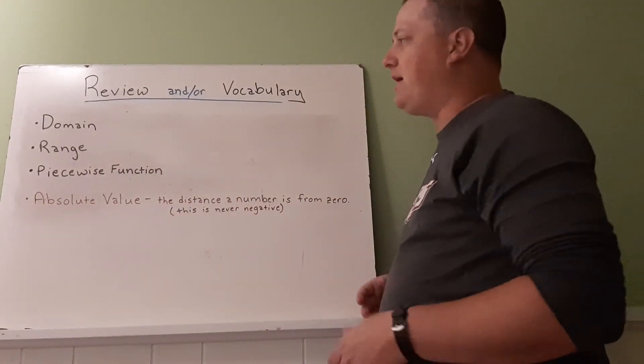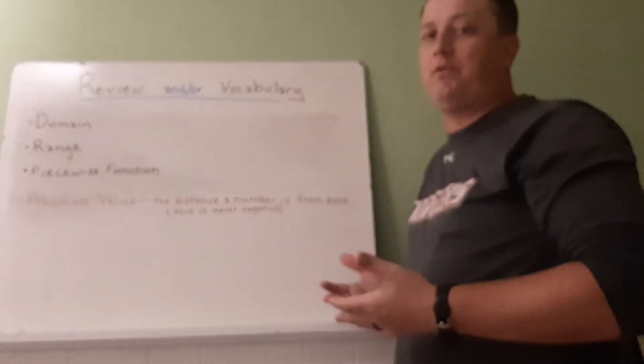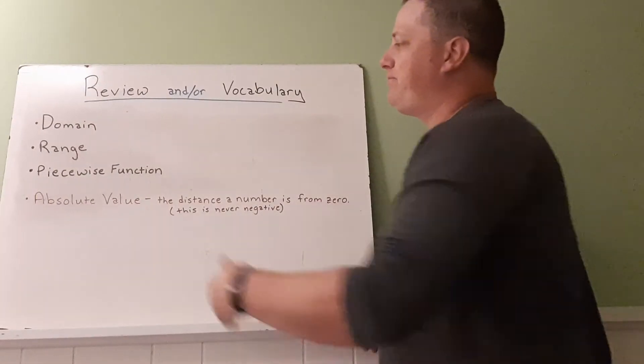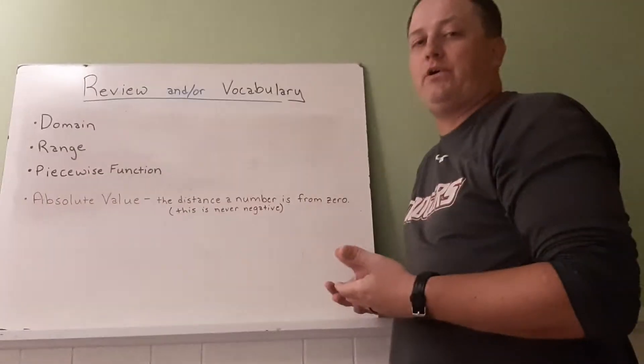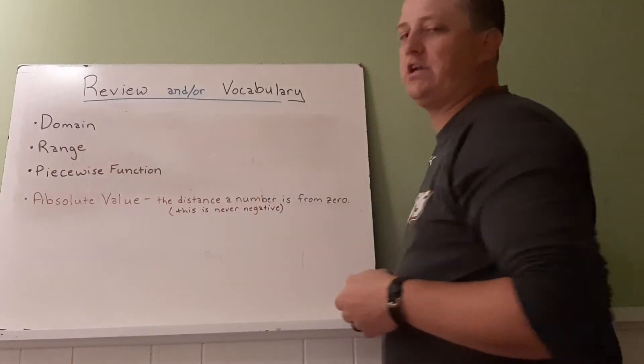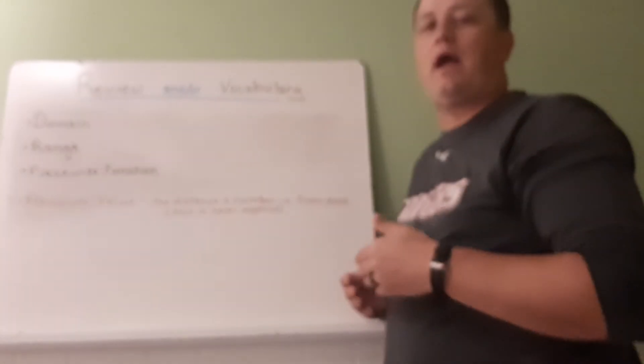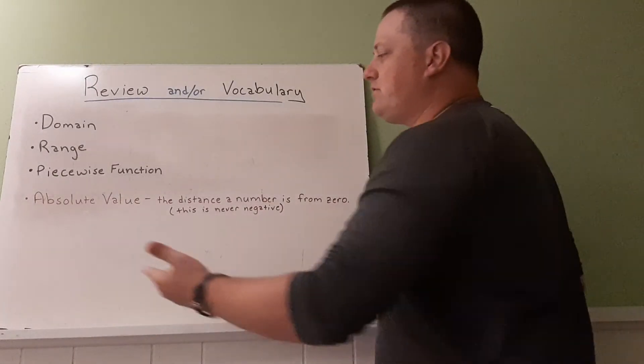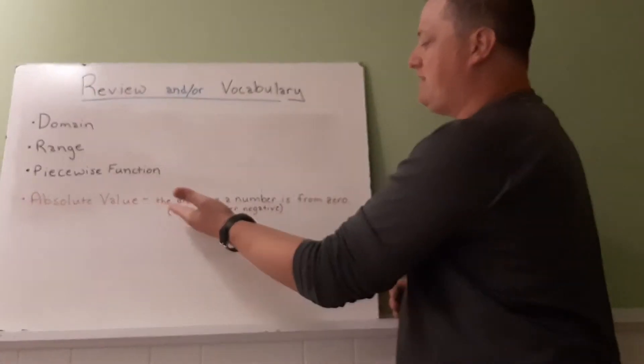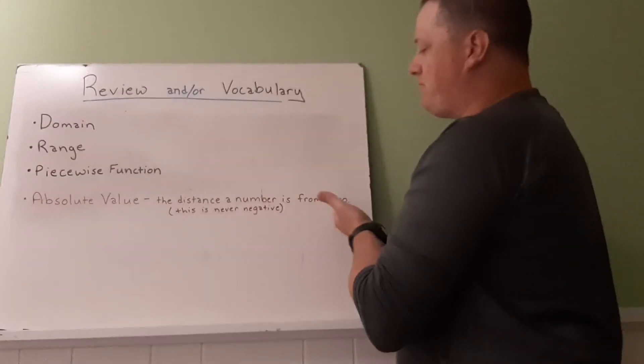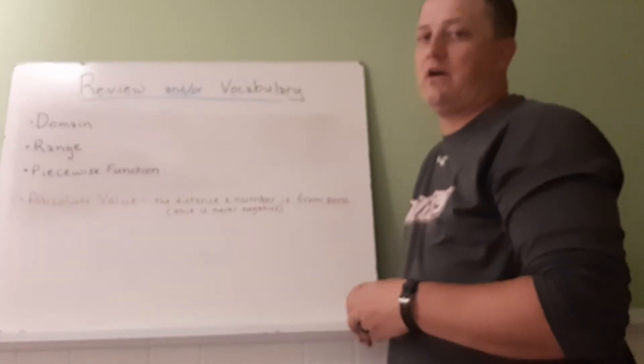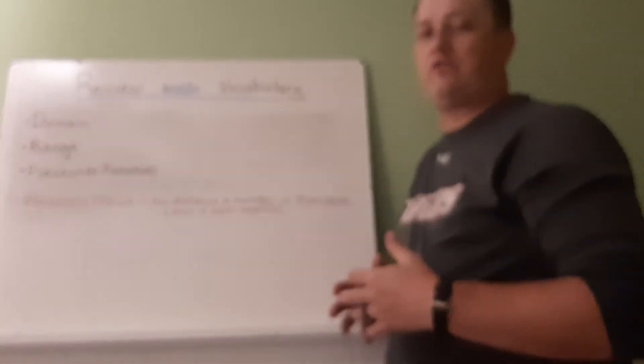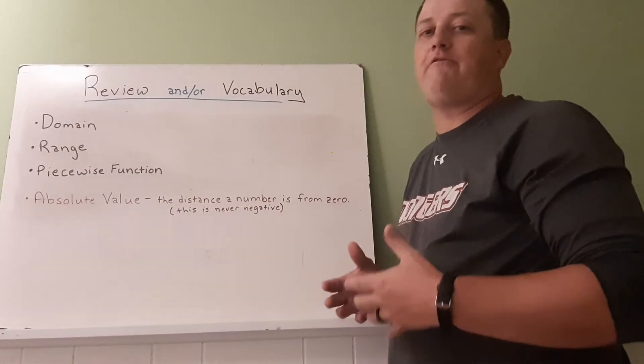So, our vocabulary is domain, all our possible inputs in the function, range, all our possible outputs in the function, and piecewise function, which is, remember, having multiple rules defining different parts of the function. And then our new words are absolute value, which is the distance a number is from zero. This is never negative. A negative one is one from zero. A positive one is also one from zero. We don't care if it's big or small, we just care about how far it is from zero.